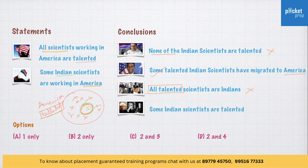Conclusion 4: Some Indian scientists are talented. Yes — there are some Indians who are scientists and they are talented. So this is also true. Therefore, conclusions 2 and 4 are valid.